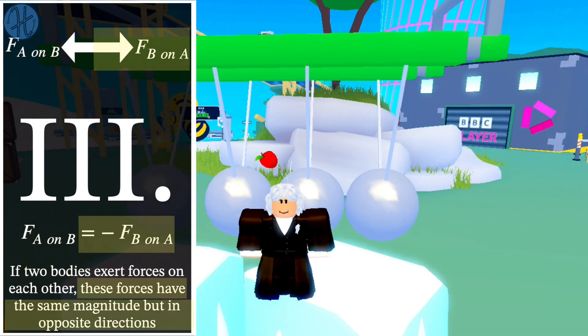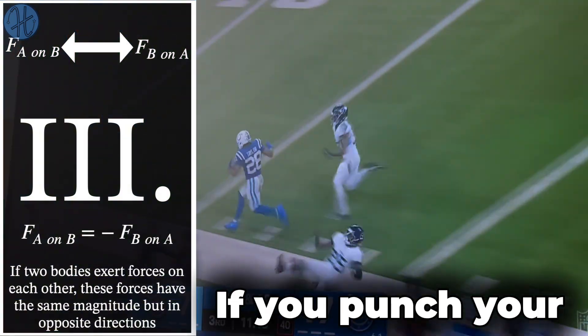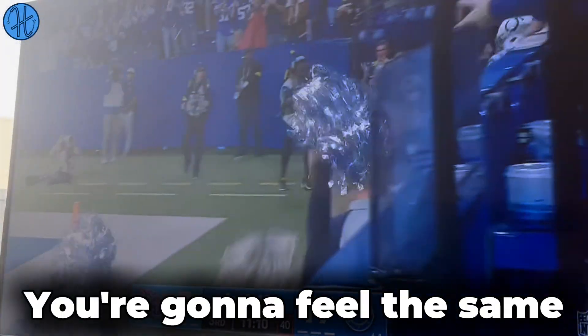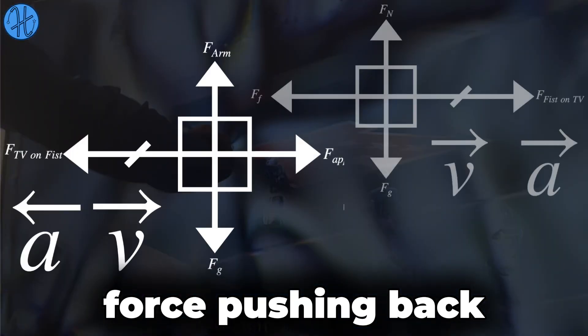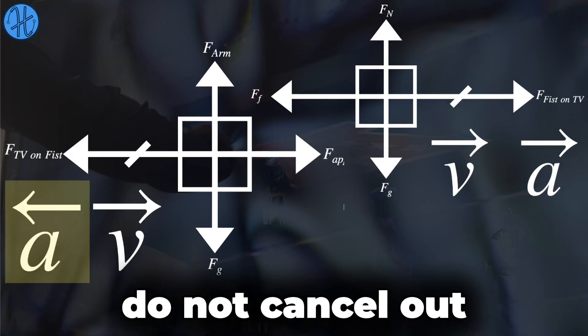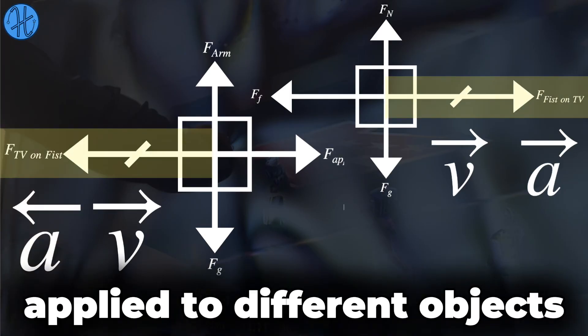The third law of motion pretty much says that in every action there is always an equal and opposite reaction. If you punch your TV screen because your favorite team upsets you, you're gonna feel the same force pushing back on your hand.